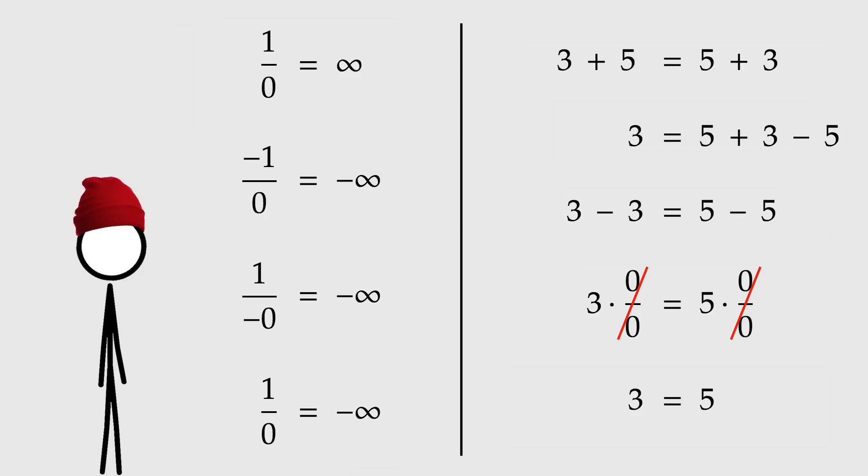The key thing to take away from all this is, yes, division by zero breaks maths. But it's actually more subtle than that. How it breaks depends on what we're dividing by zero. In the first proof, we tried to compute one over zero and found that it's equal to both positive and negative infinity. But in the second proof, we messed around with zero over zero and got three equals five. And obviously, you can make any number equal to any other number in the same way.